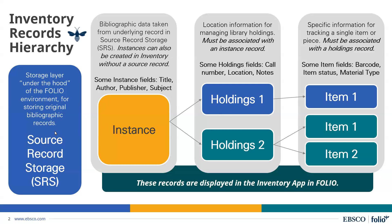We have another layer called Source Record Storage, or SRS, which is a sub-layer of FOLIO inventory that stores metadata in other schemas and maps that metadata out to the instance record via an underlying mapping file. The key takeaway is that FOLIO has a hierarchical structure for cataloging records, and in the future, when supporting various sources for bib records, it will display all records in a consistent way regardless of the source.